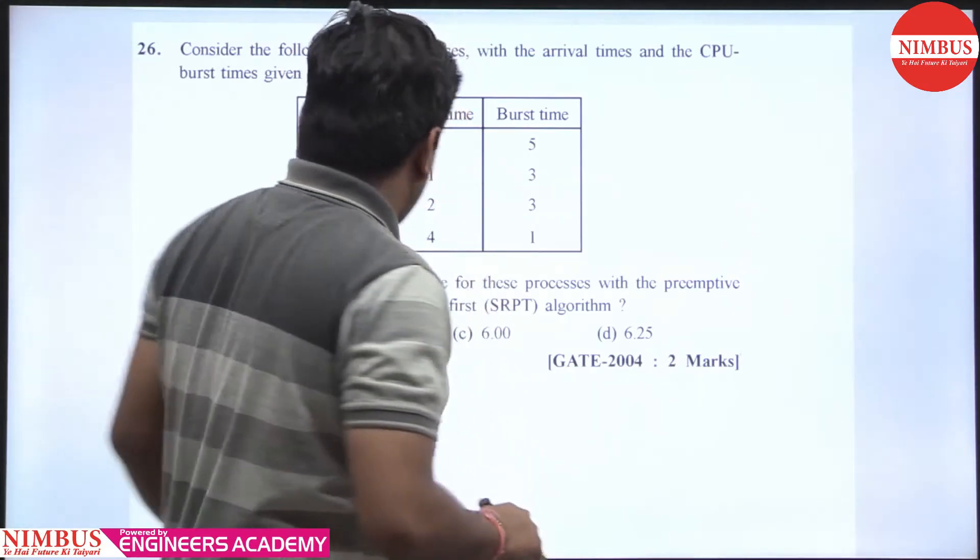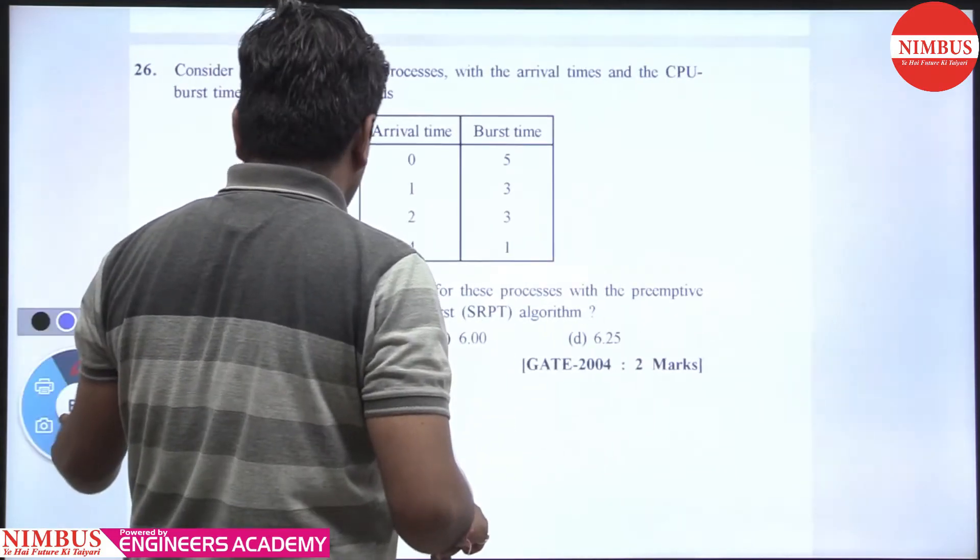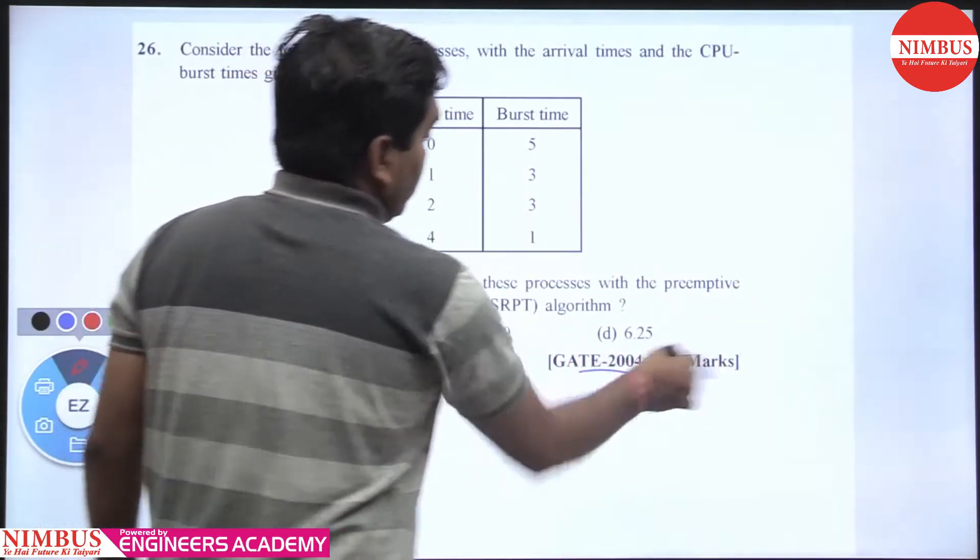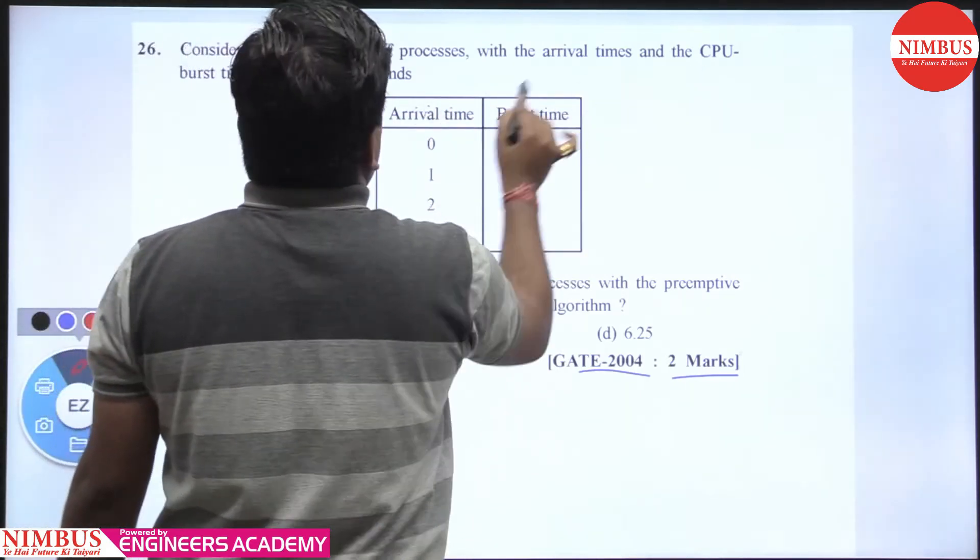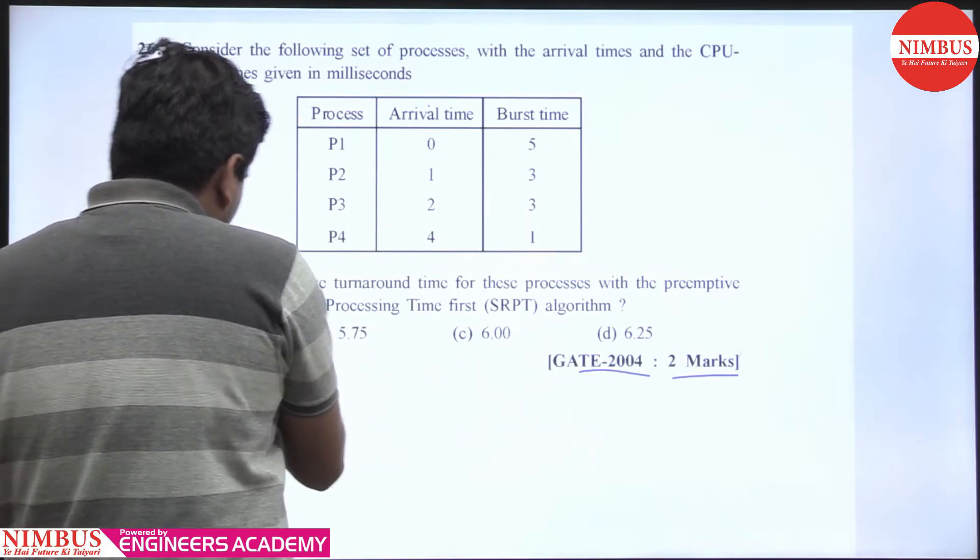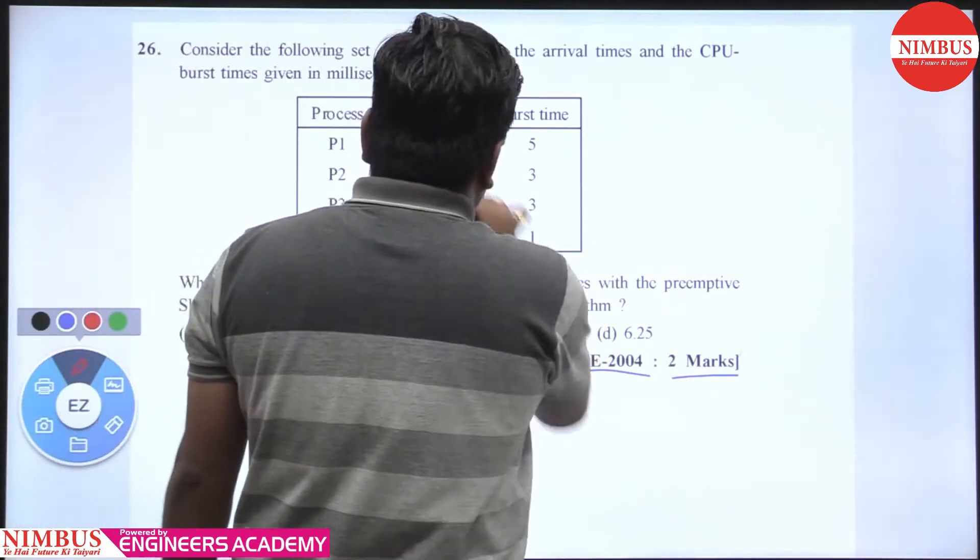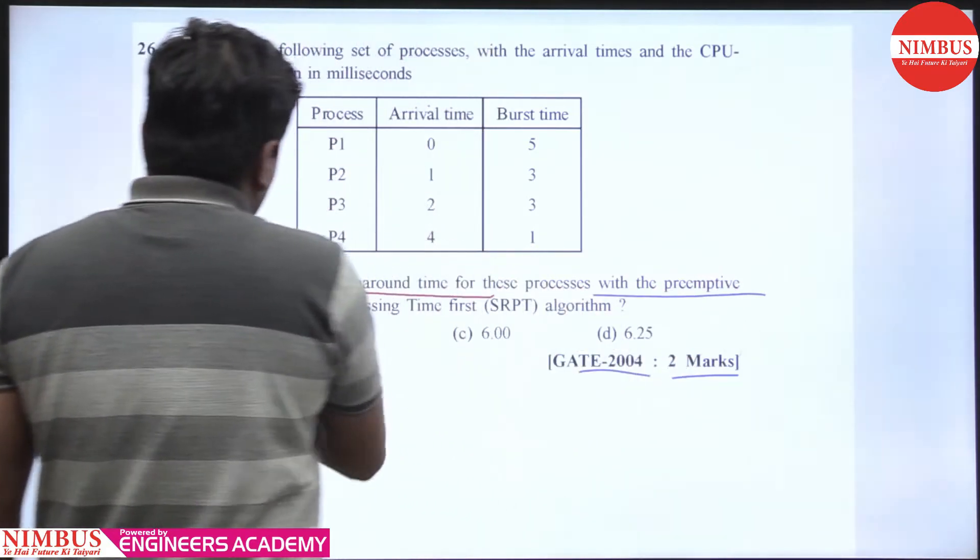Hello students, this is a question from GATE 2004 worth 2 marks. Consider the following set of processes with arrival time and CPU burst time given in milliseconds. The question asks about the average turnaround time for these processes using preemptive SJF.